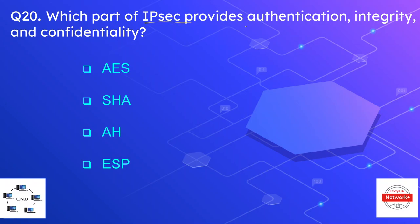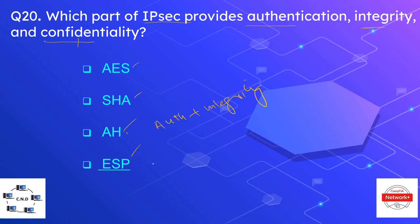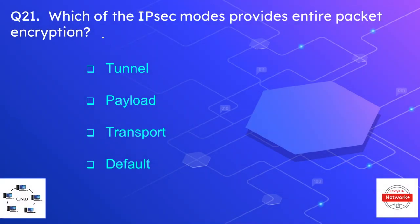Question number twenty is: which part of IPsec provides authentication, integrity, and confidentiality? The options are AES, SHA, AH, and ESP. The correct option is ESP — Encapsulating Security Payload. ESP provides authentication, integrity, plus confidentiality, while AH only provides authentication plus integrity. ESP additionally provides confidentiality as well.